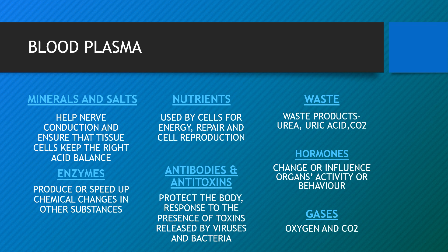The main role of plasma is to take nutrients, hormones and proteins to the parts of the body that need it. Cells also put their waste products into the plasma, and the plasma then helps remove this waste from the body. Blood plasma also carries all parts of the blood through your circulatory system. The difference between blood and plasma is that blood is the main bodily fluid transporting nutrients, oxygen, carbon dioxide and waste products, while plasma is the liquid component of the blood excluding blood cells. Blood contains red and white cells and platelets; plasma does not contain any cells.